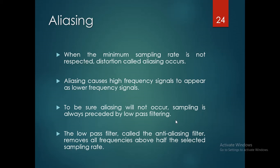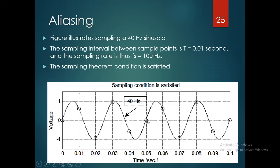The low pass filter is called an anti-aliasing filter. The anti-aliasing filter is the second stage whenever an analog input signal is being converted into the digital signal. It removes all frequencies above the selected sampling rate.